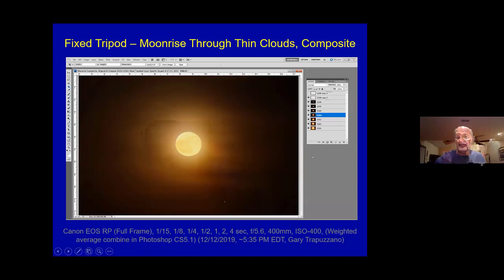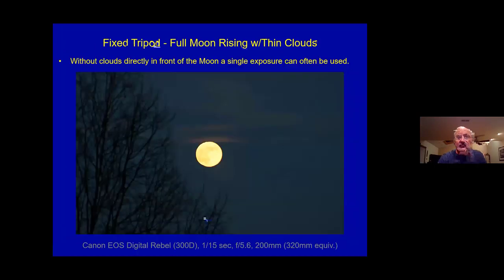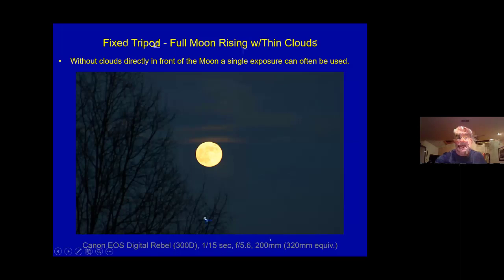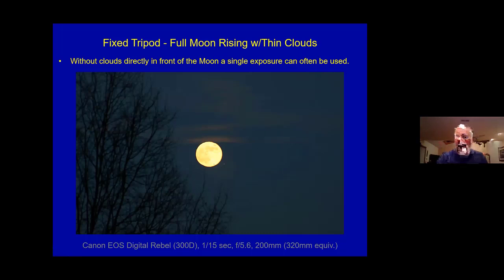Here's another moon shot with wispy clouds just above the moon — a single 1/15th-second exposure, no compositing needed, because those clouds weren't thick and weren't in front of the moon. This is a 300mm equivalent on a crop sensor digital rebel with a fixed tripod. Since the dynamic range was not affected by clouds backlighting the moon, a straight single shot works perfectly.